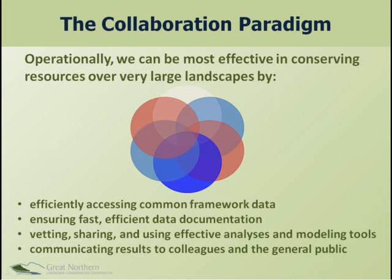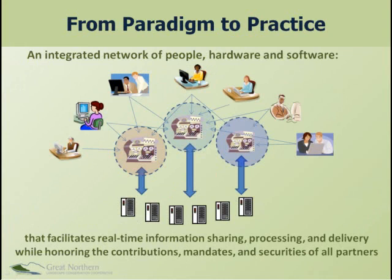We're working on this new collaborative paradigm. Operationally, we can be most effective in conserving natural resources over very large landscapes by being efficient in the way we access common framework data — baseline data, elevation data, climate data, roads, etc. — that we all use to understand how landscape changes are occurring. We also need to ensure fast, efficient data documentation, that is documenting with metadata the data we deliver and the models we create. We need to vet, share, and use effective analyses and modeling tools in common work environments.